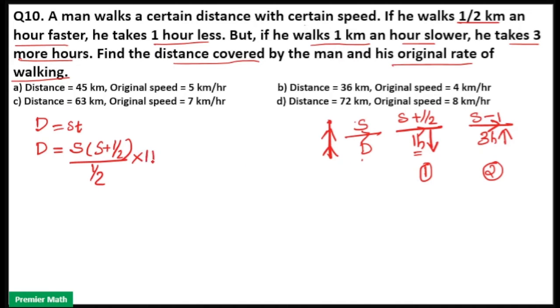That is equal to the second case: initial speed is s, final speed is s minus 1, and increased speed is 1. Time difference is 3 more hours to cover the journey. Here distance I equalized, so s will cancel.